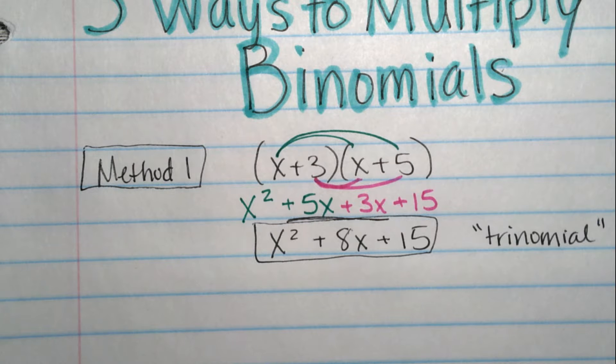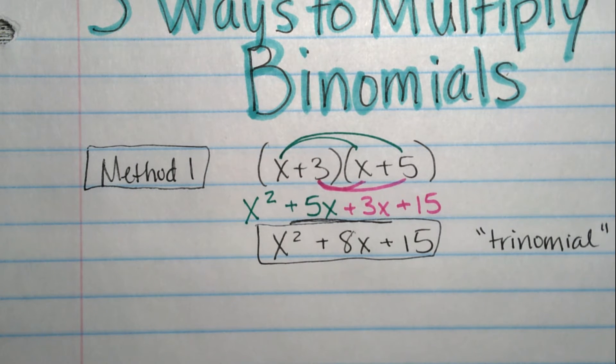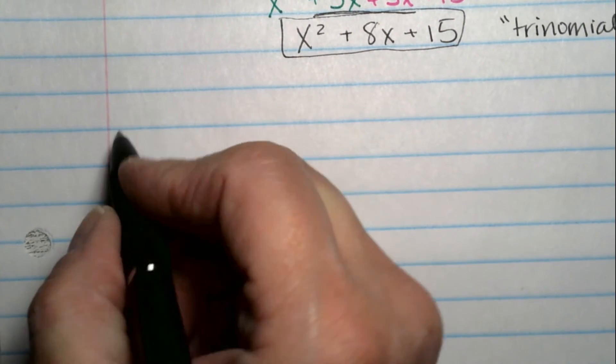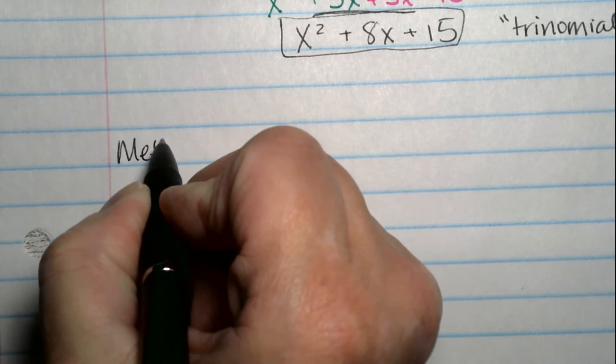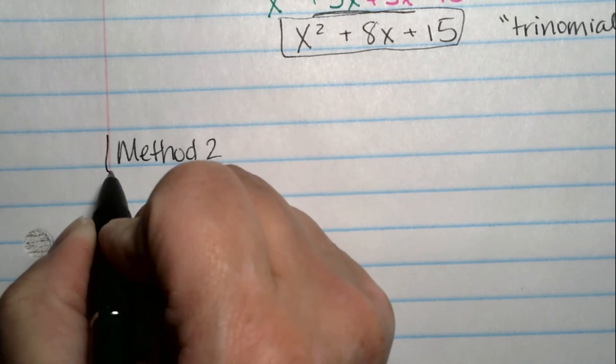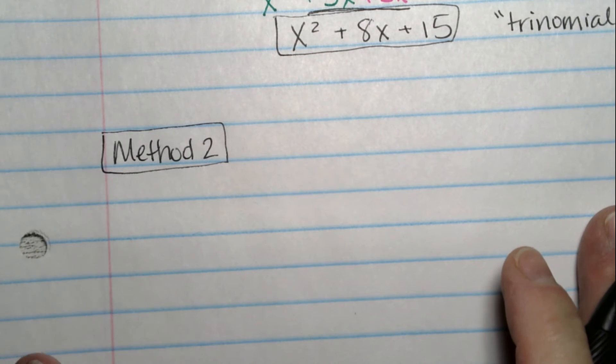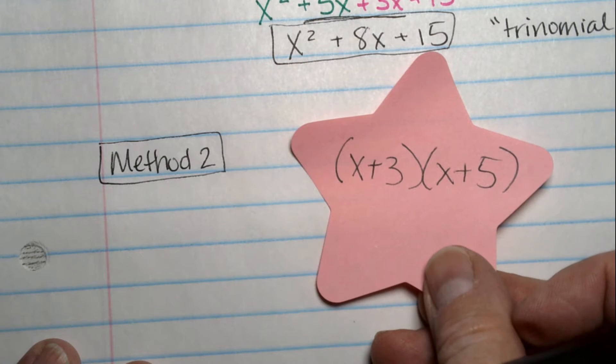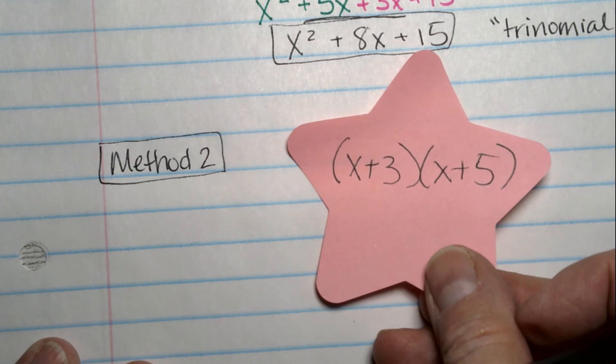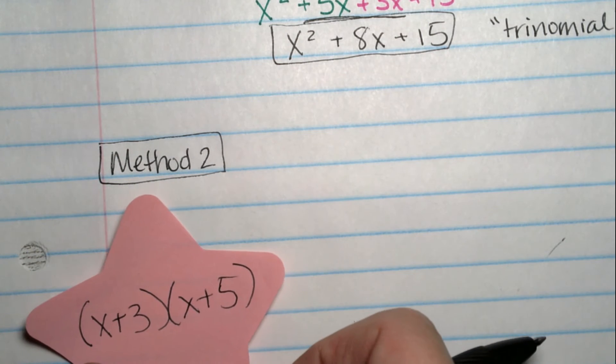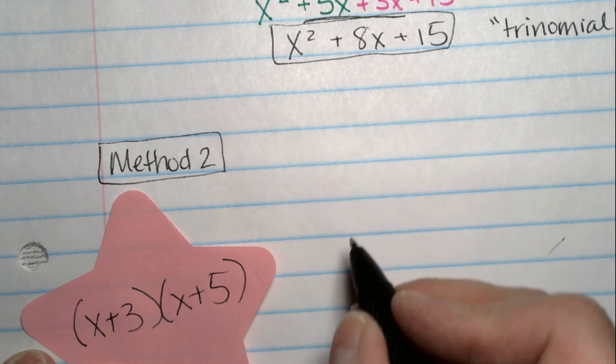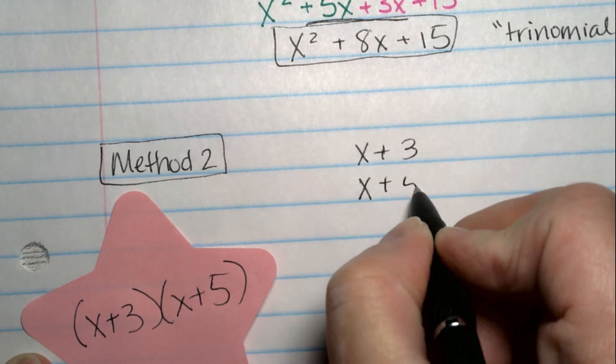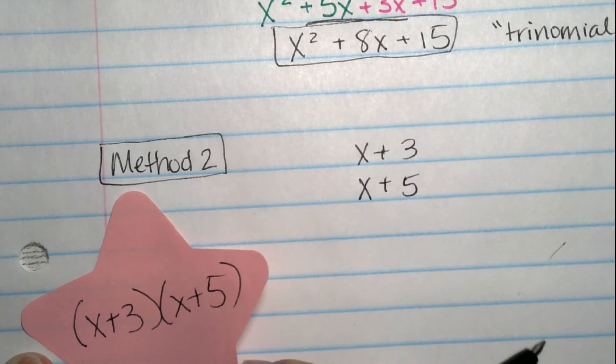The second method, I'm going to show you three different ways because everybody's a little different, right? Okay. So the second method is one that I haven't seen too many teachers use. I did it when I was a student because it made sense to me. I would write the problem. Again, the problem we're doing is x plus 3 times x plus 5. And so what I would do is just write that down on my paper vertically like this. x plus 3 and x plus 5. And I knew I was multiplying them.